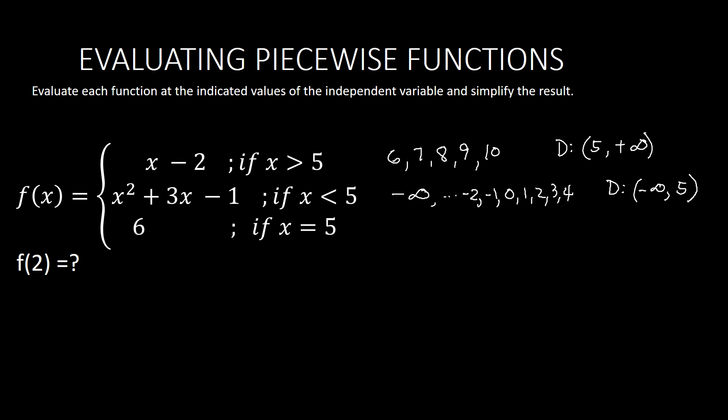For the third domain, it says x is equal to 5. That simply means the domain contains only the number 5 — no more, no less. So the domain is just the single value x equals 5.